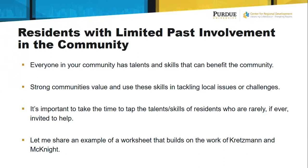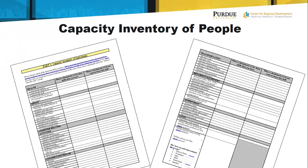Let me share an example of a worksheet built from the work of Kretzmann and McKnight. You can't read this very well, but we have a worksheet that asks people: do you have skills related to health, to office work, to computer-related activities, to sales, to supervision, to machinery repair, to transportation? We have a whole host of areas where we ask people — do you have this skill? And if not, is this a skill you would like to learn? We do two things at one time: not only do we identify areas where they have talents they want to share and contribute to the community, but they're also expressing things they'd like to get better at — and this could become a good workforce development or leadership development activity for our communities. I recommend you look at this worksheet and adapt it to your local needs.